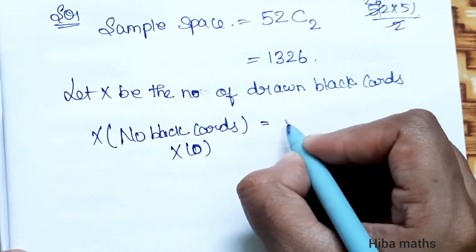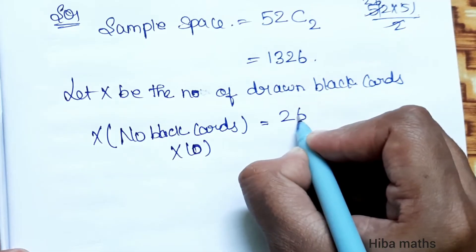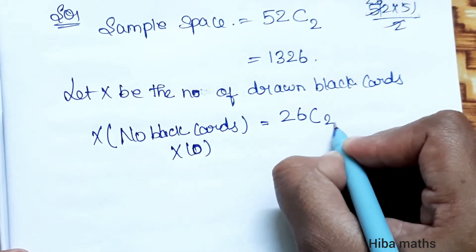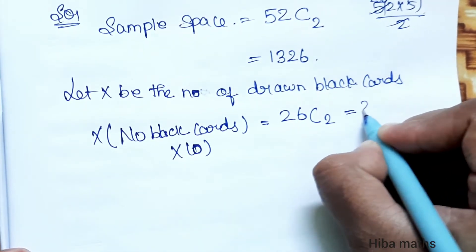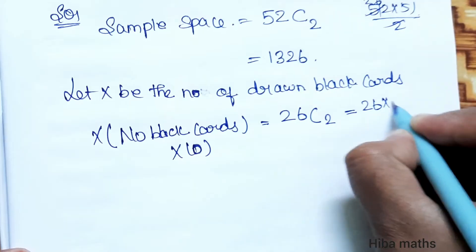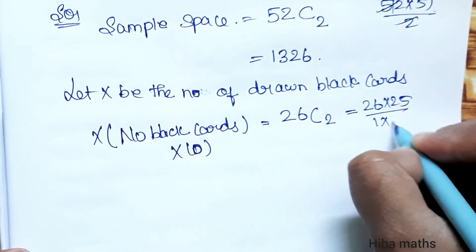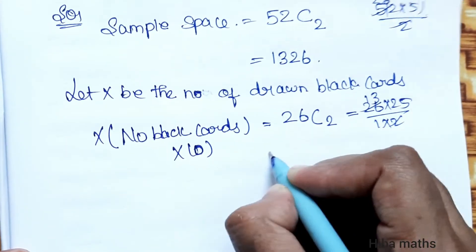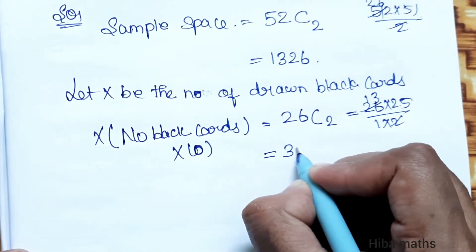When x = 0, no black cards are drawn, meaning both cards are red cards. There are 26 red cards total, so we choose 2 from them: 26C2 = 26 into 25 divided by 2 = 13 into 25 = 325.